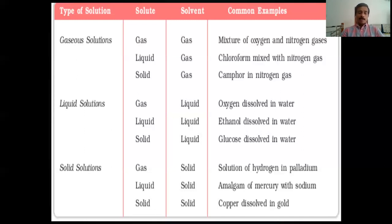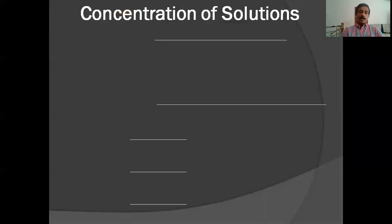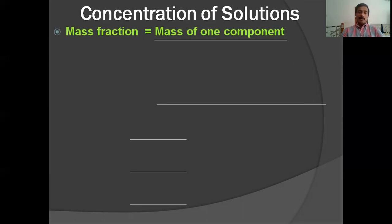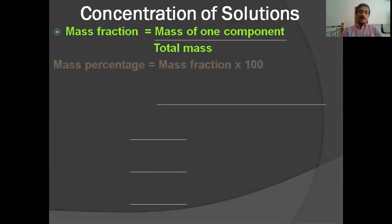Now you have to recollect the various methods for the calculation of concentrations of solutions. The first one is mass fraction — mass of one component divided by the total mass of the solution. Mass fraction multiplied by 100 gives mass percentage.